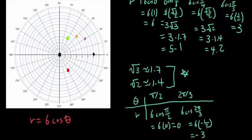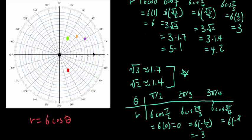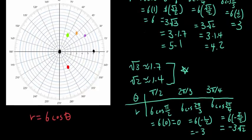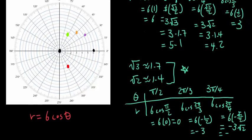Let's try 3 pi over 4, which is 135 degrees. When you plug it in, you get 6 times cosine of 3 pi over 4, which is 6 times negative square root of 2 over 2, or negative 3 times square root of 2, which is about negative 4.2. So when theta is 3 pi over 4, you're going to go backwards 4.2 steps, which is going to be about there.